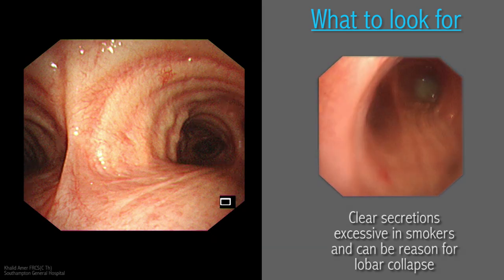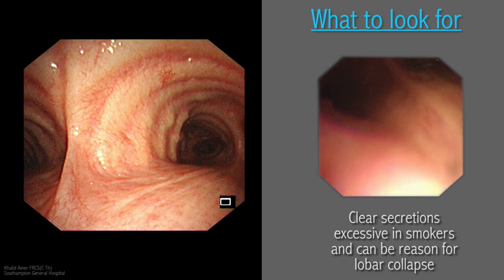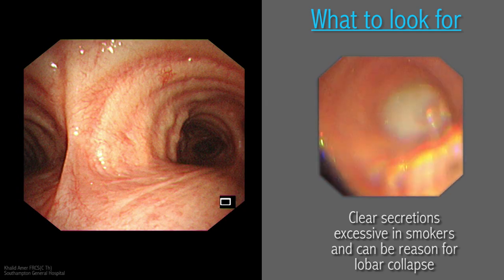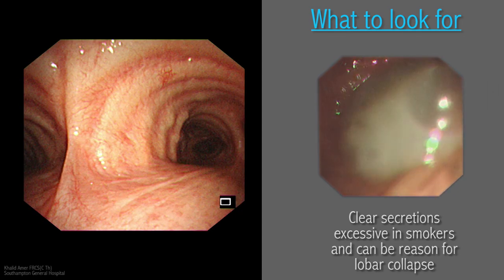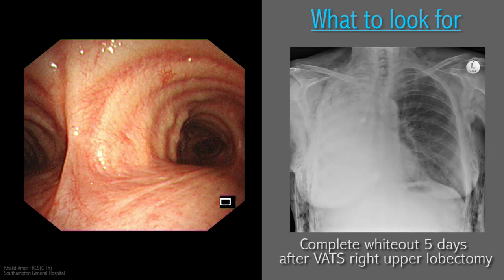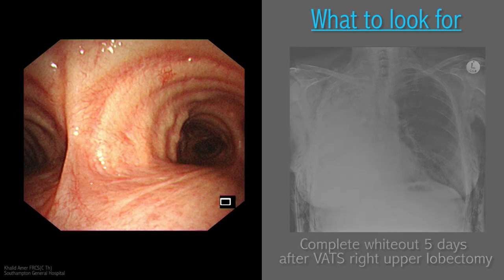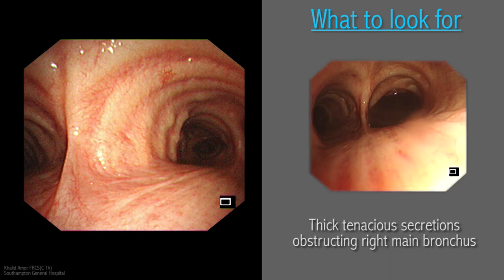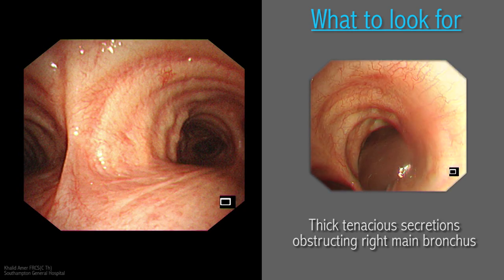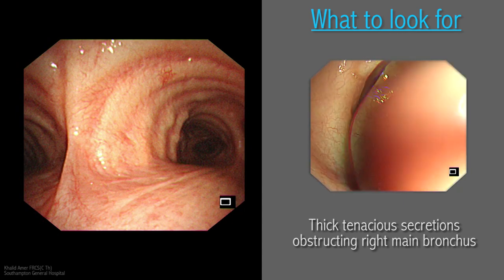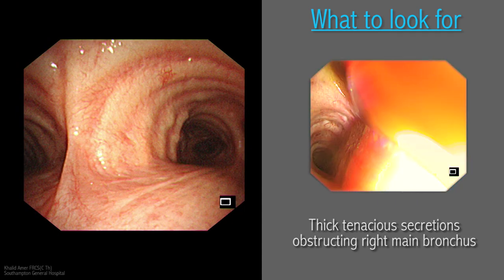Patients with limited lung capacity might not tolerate lung collapse and the balance might tip towards respiratory failure in the immediate postoperative period, requiring escalation to intensive care admission, as in one patient whose postoperative chest x-ray showed complete white-out five days following VATS right upper lobectomy. The situation was salvaged by bronchoscopic suction and lavage under general anaesthesia.